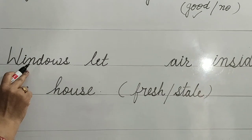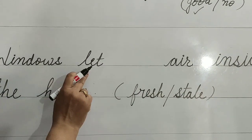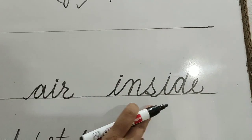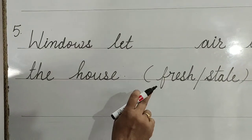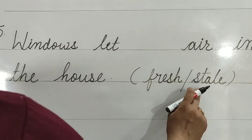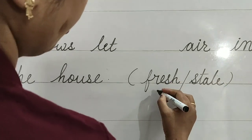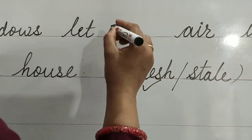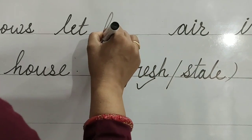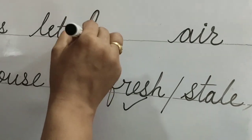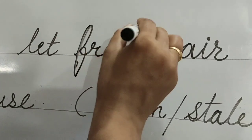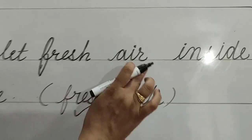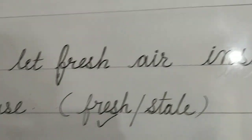Question 5: Windows let dash air inside the house. The options are fresh or stay. Fresh is the correct option. So tick here and write down fresh. Windows let fresh air inside the house.